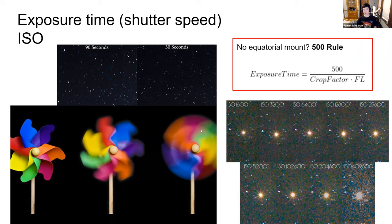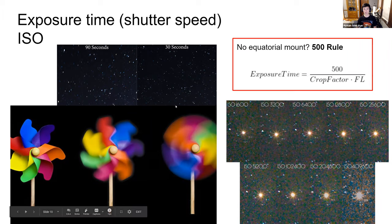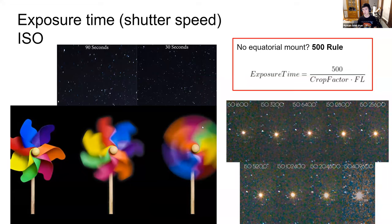You can increase ISO to amplify signal and reduce required exposure time, but amplifying too much produces noise. For most consumer cameras I recommend ISO 1600. Some can go up to 6400, but above that, noise appears that cannot be corrected even by stacking. Try to keep ISO below 6400, ideally 1600 or lower.